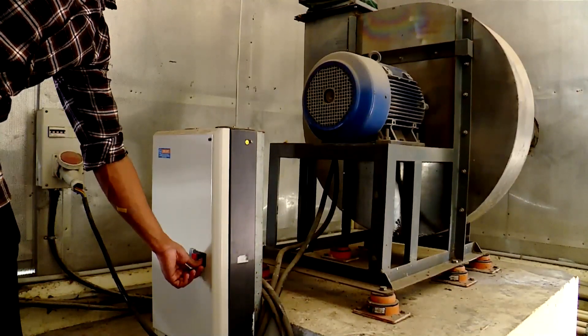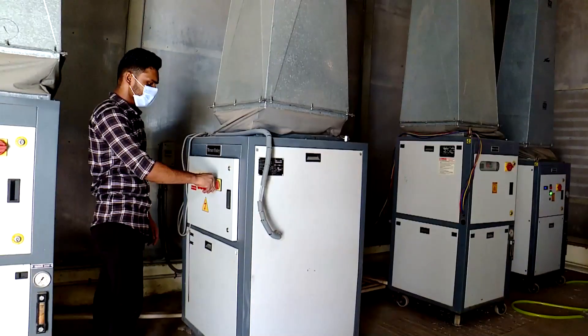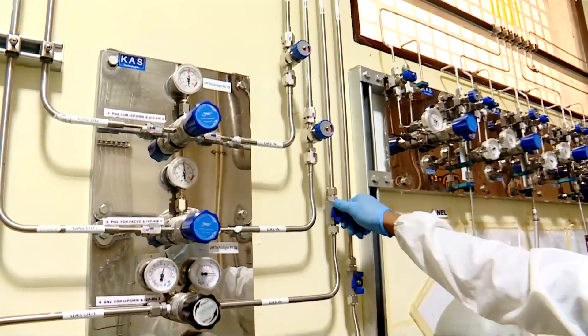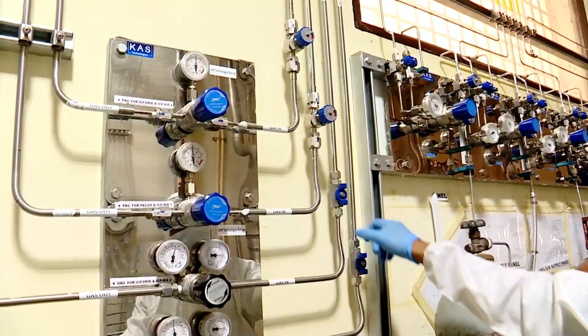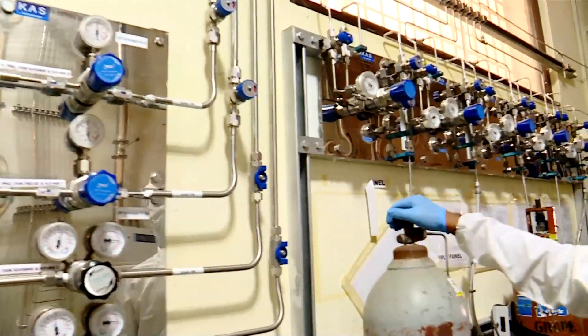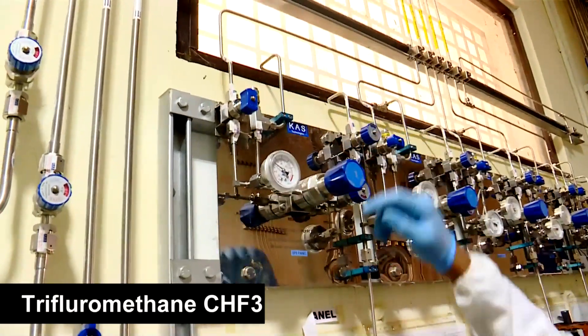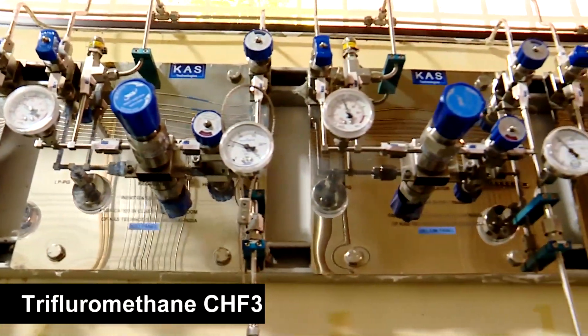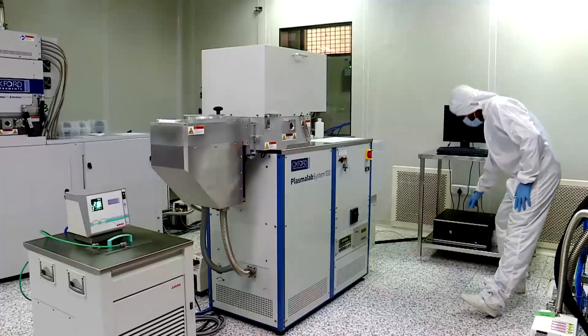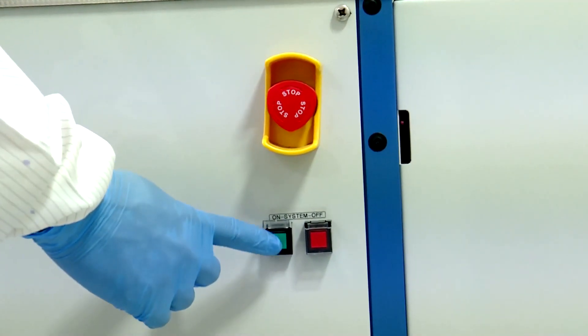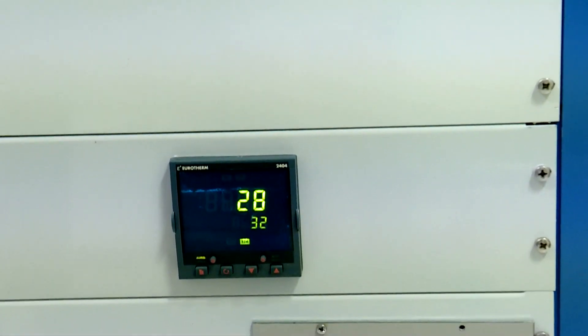First, we have to turn on the process exhaust and chiller for the system. Next, we will check the gas lines and open the gas cylinders for this particular etching process. Here, trifluoromethane CHF3. Next, switch on the interfacing computer and ICP-RIE system and check the status of parameters like temperature and pressure.